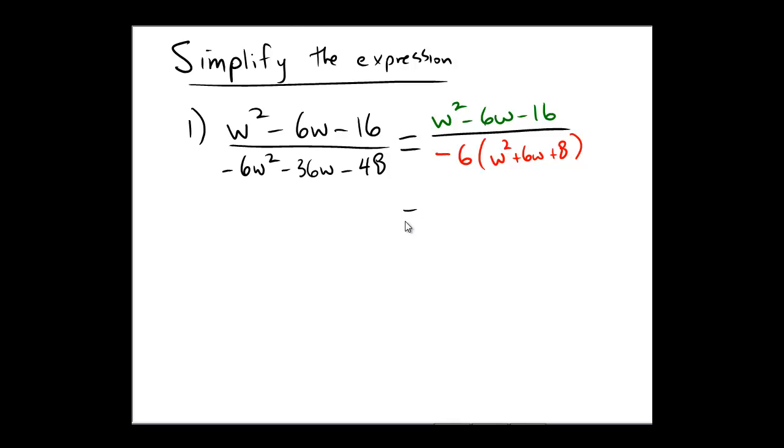Next stage, let's try to figure out what the numerator and the denominator are from factoring. So, on the top, we need an adding number of negative 6 and a multiplying number of negative 16. We need two numbers that add to be the linear coefficient and multiply to be the constant term. If you think about it for a couple of seconds here, this would be negative 8 and 2, of course.